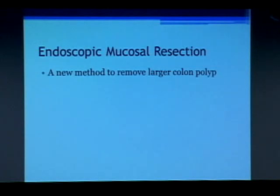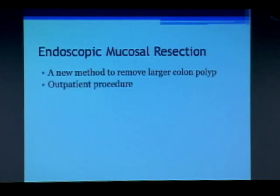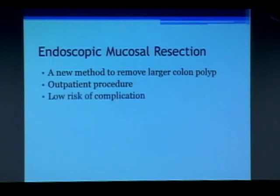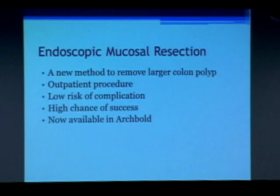Endoscopic mucosal resection, or EMR, is a new method to remove larger polyps in the colon — we can remove polyps up to 10 or even 15 centimeters. Those are very large polyps that normally would require surgery, but we can take them out here without needing an operation. This is for polyps, not cancer — cancer still needs surgery, chemo, and radiation. It is done as an outpatient procedure. The risk for a break in the lining of the colon is about 1%, and the risk of bleeding after is about 5%, but it has high chances of success and is now available here.